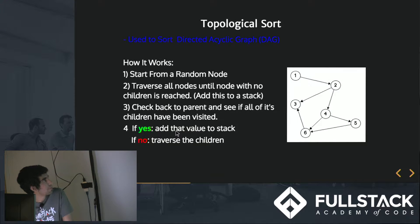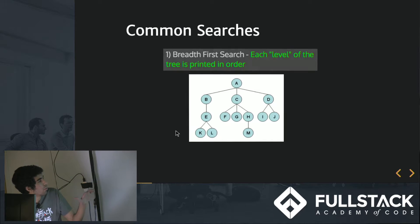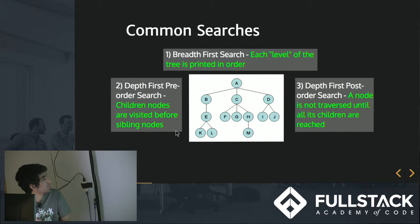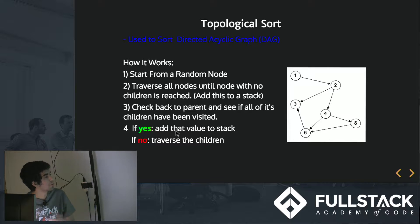So one of them is a topological sort, and they're used to sort directed acyclic graphs. And it kind of works like depth-first post-order search because you start with a random node, and you basically traverse all the children until you find a node